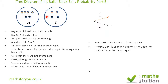Now you transfer the ball you picked from Bag A into Bag C, so we create a new branch. Suppose you picked a pink ball and put it into Bag C — the number of pink balls in Bag C increases by one to three, so the probability of picking a pink ball from Bag C is now 3 over 5. The number of black balls stays the same at 2, but the total is now 5, so the probability of picking a black ball from Bag C is 2 over 5.